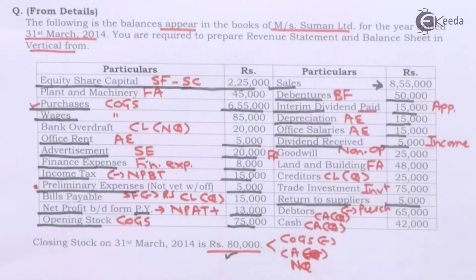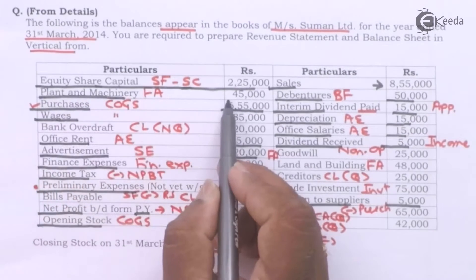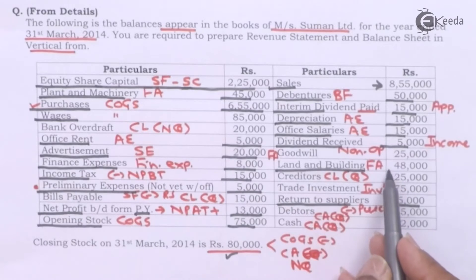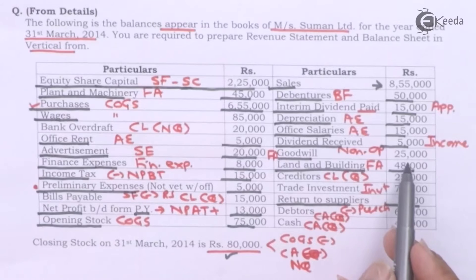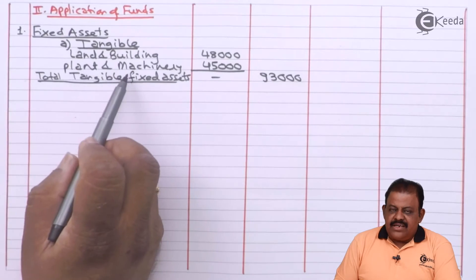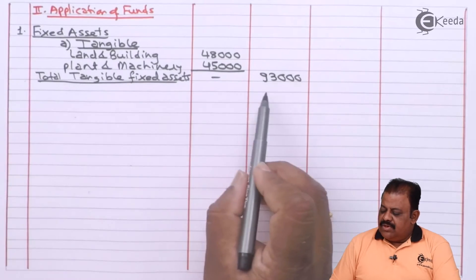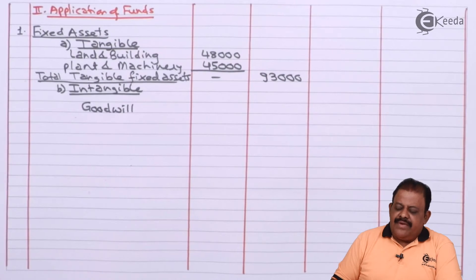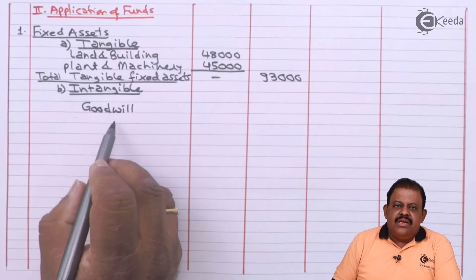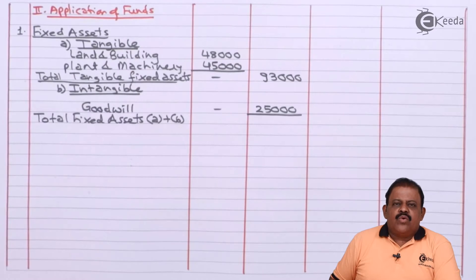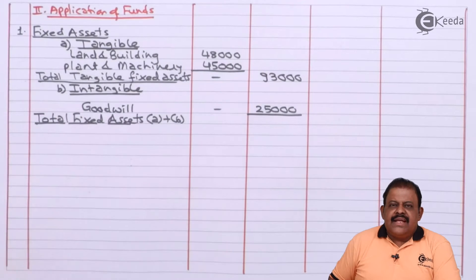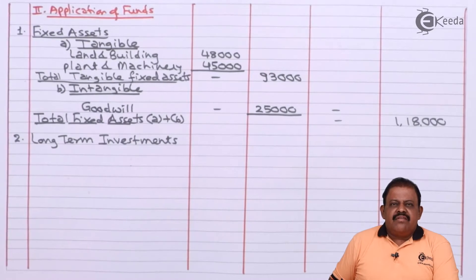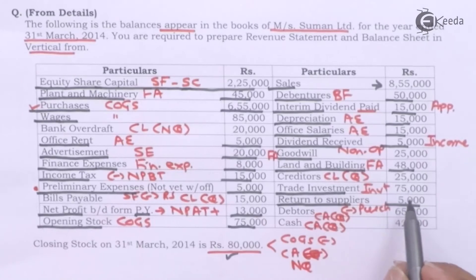Now we go to the second part of the balance sheet: application of funds. First we have fixed assets: plant and machinery 45,000, land and building 48,000 — total tangible fixed assets 93,000. For intangible fixed assets we have goodwill 25,000, giving total fixed assets of 1,18,000. To this we add long-term investments: trade investments 75,000.